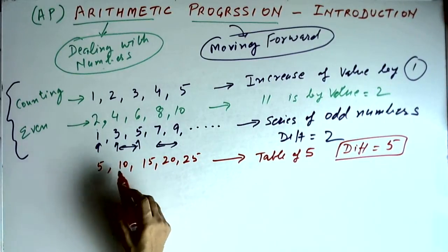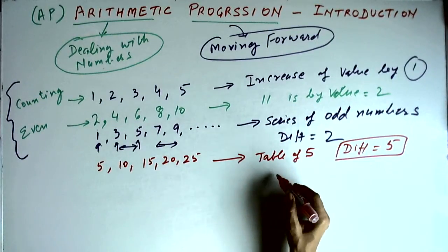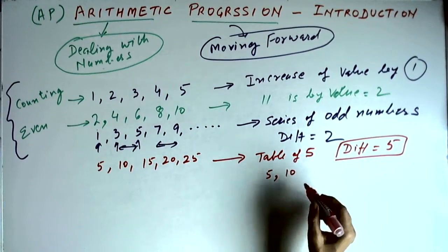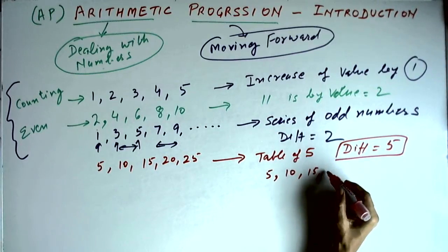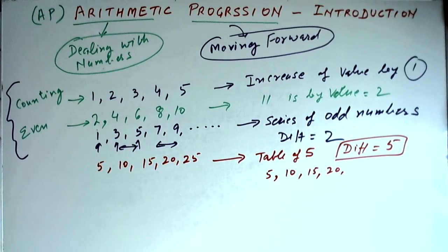Here the difference is 5, and this difference is also called the common difference because it is the same between any two consecutive terms. So if we have 5 and add 5 we get 10, add another 5 we get 15, and so on. You may remember as a child, when you could not recall your multiplication tables, you would answer by just keep on adding — so actually you were learning arithmetic progression at that point of time.